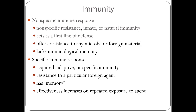Specific immune response could be acquired, adaptive, or specific immune. Remember we talk about four different types: natural passive immune, natural acquired active immune, artificial acquired active immune, and artificial acquired passive immune. I drew those on the blackboard on YouTube, so you'll need to look at that. The specific immune response is resistant to a particular foreign agent, usually has strong memory ability, and effectiveness increases with repeated exposure to the agent.